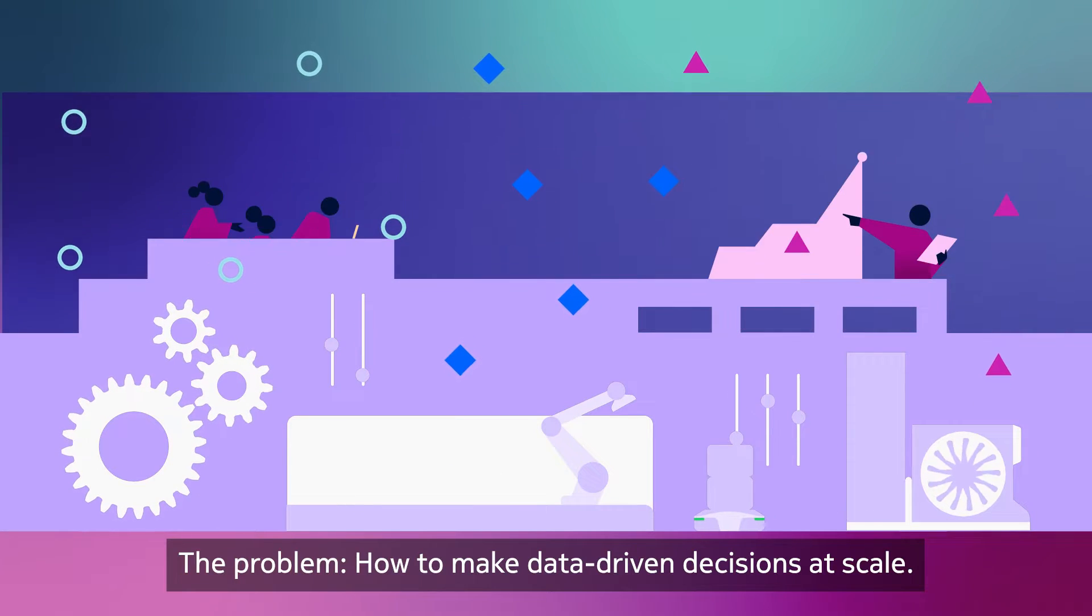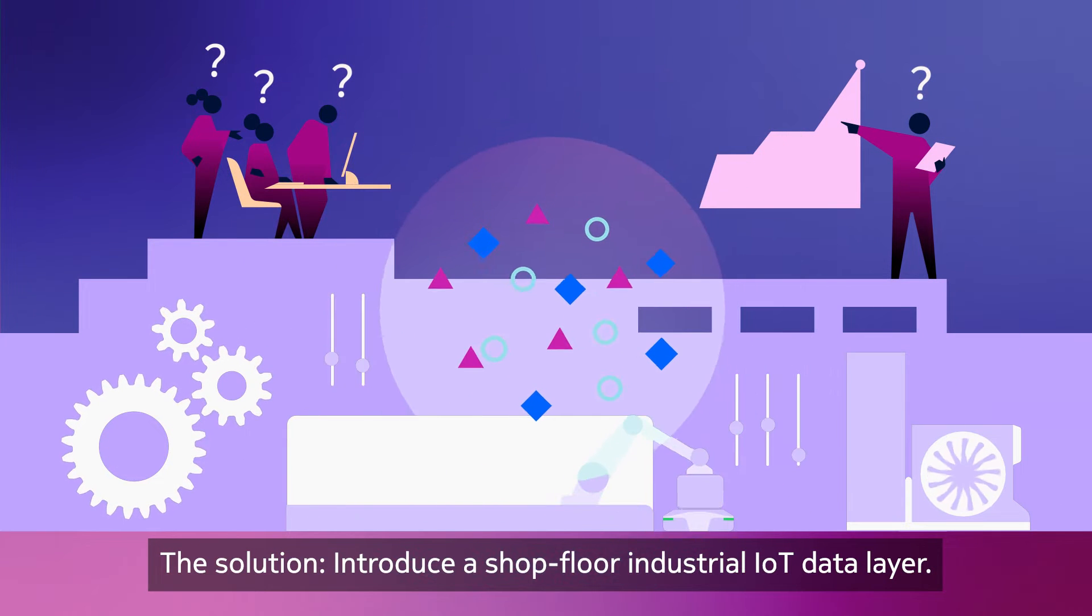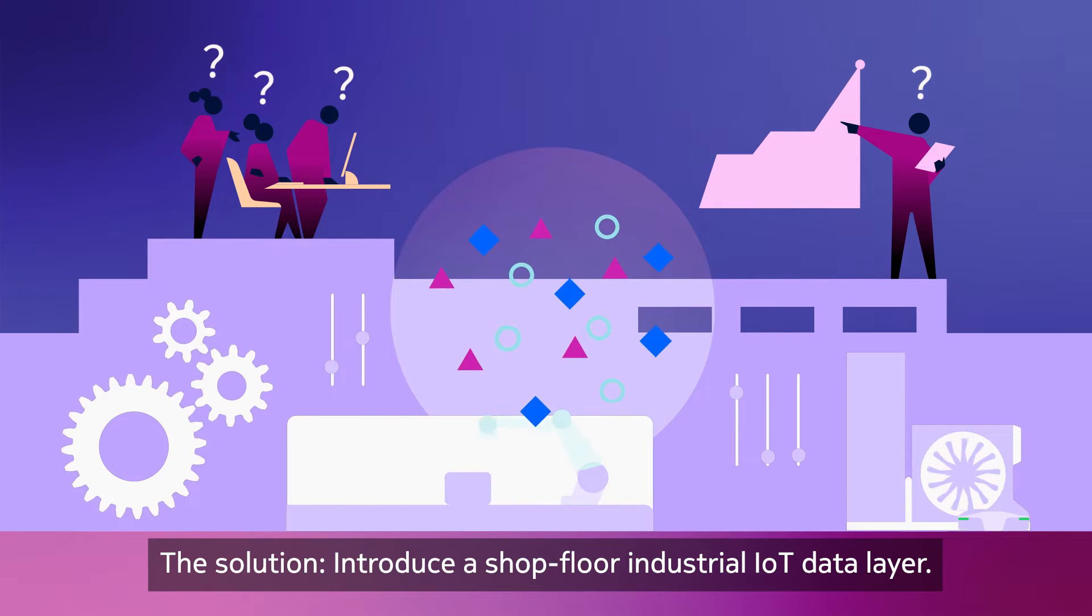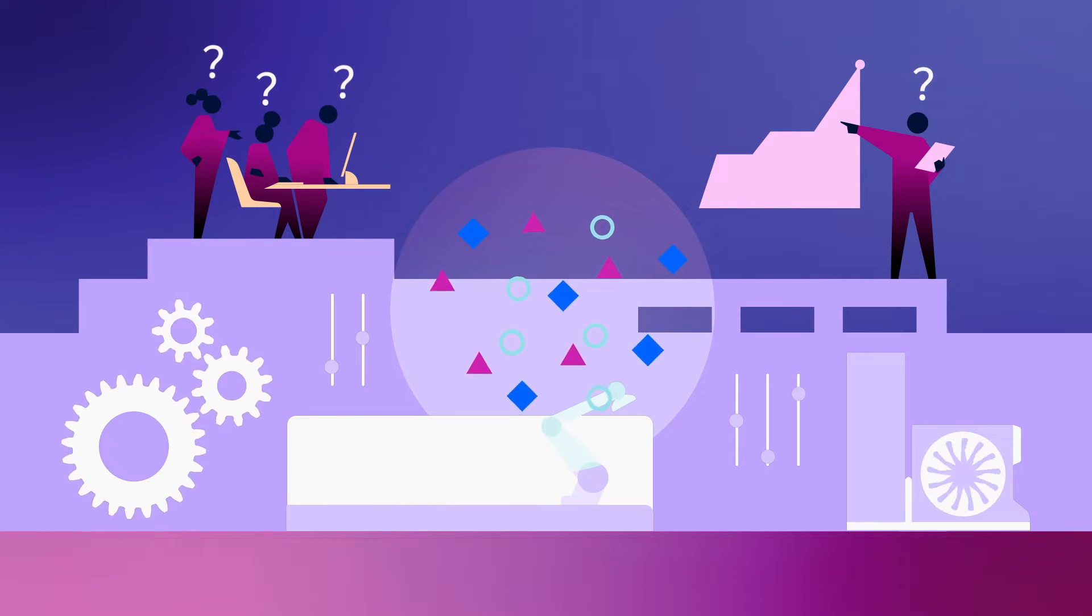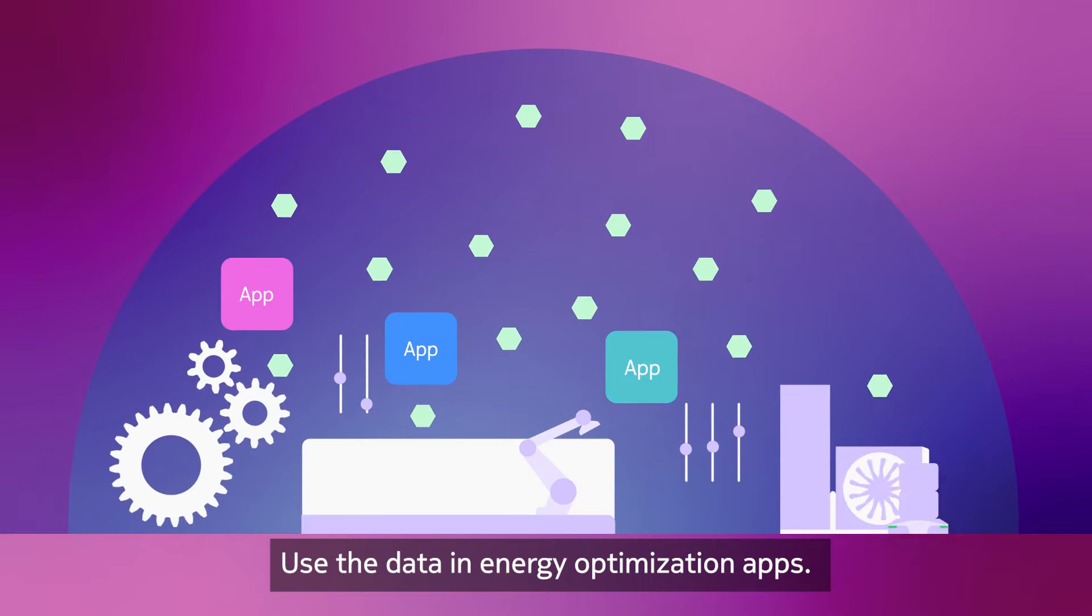The problem? How to make data-driven decisions at scale. The solution? Introduce a shop floor industrial IoT data layer. Harmonize the data. Use the data in energy optimization apps.